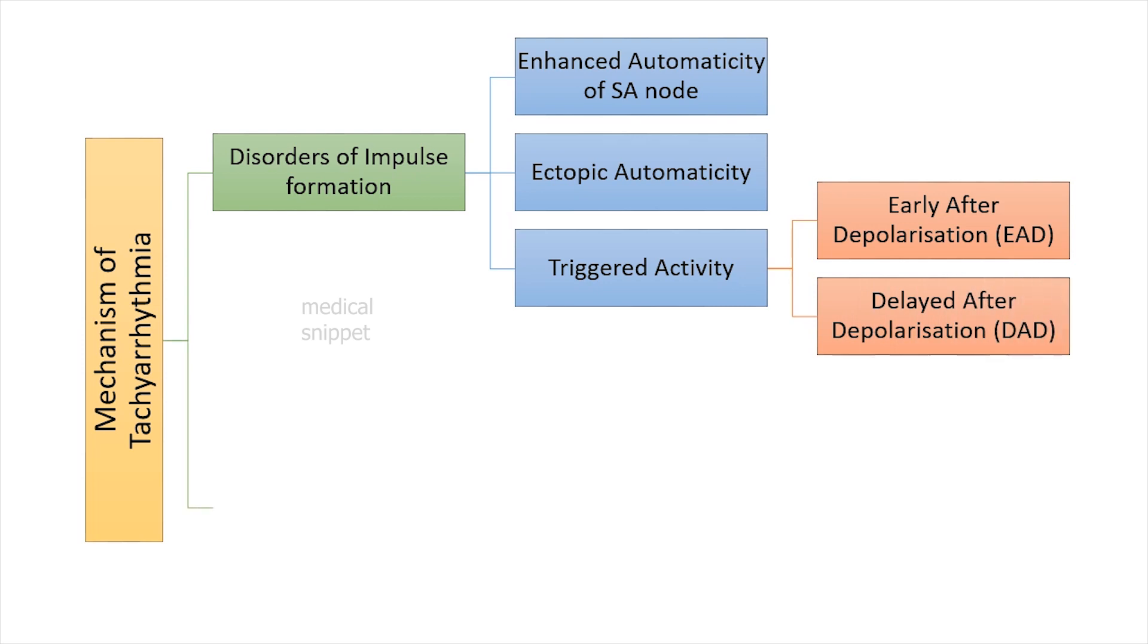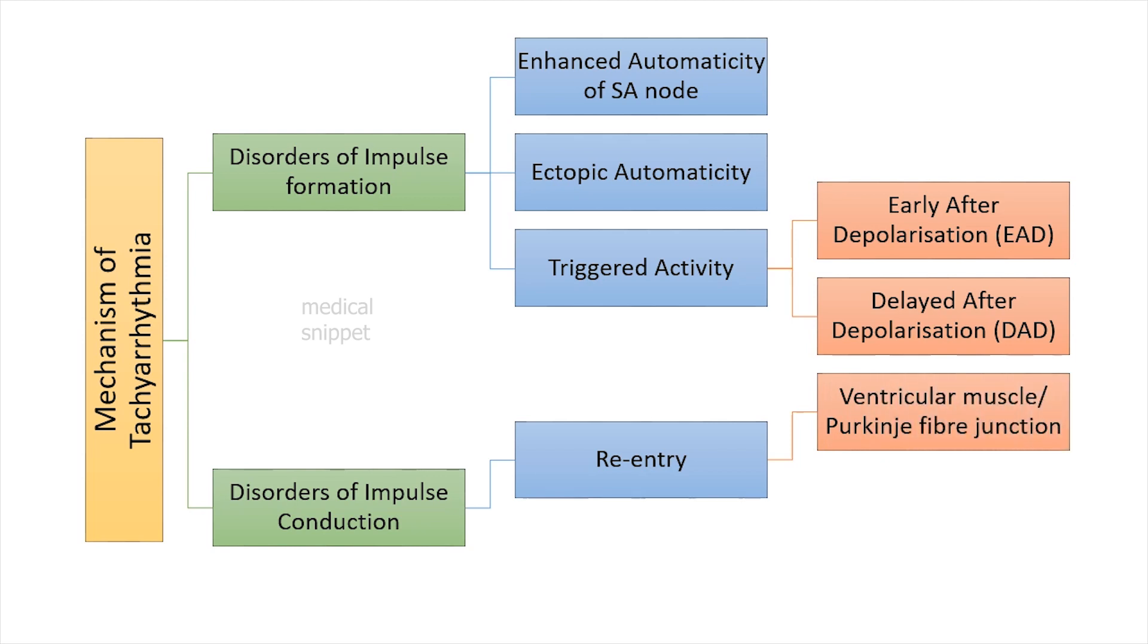The second major mechanism of tachyarrhythmias is disorders of impulse conduction. It could be a re-entry mechanism, also called circus movement. It can occur at ventricular muscle Purkinje fiber junction or at AV nodal pathway. The second disorder of impulse conduction is the presence of accessory conduction pathway such as in Wolff-Parkinson-White syndrome. Let's see each mechanism in detail.